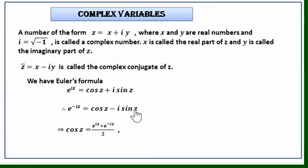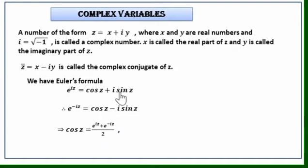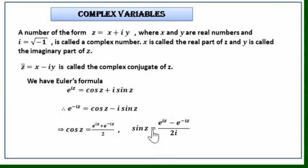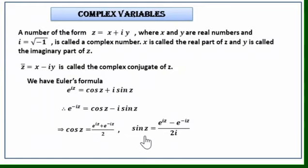Subtracting the second equation from the first, we get the expression for sin z. That is, e^(iz) - e^(-iz) = 2i·sin z, so sin z = (e^(iz) - e^(-iz)) / 2i. These are the complex representations of cosine and sine functions.